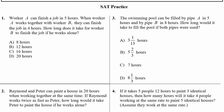Practice number one: Worker A can finish a job in five hours — time is five hours. Worker A and Worker B together take four hours — that is the combined time. The question is: how long does it take for Worker B alone to finish the job?